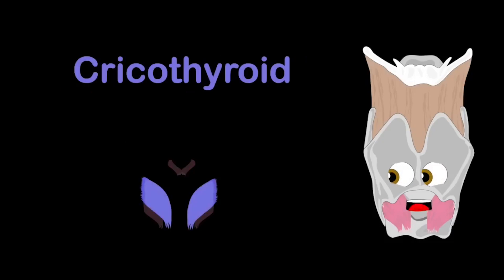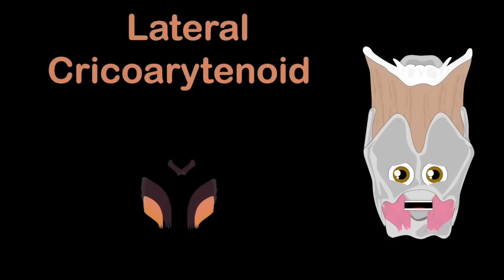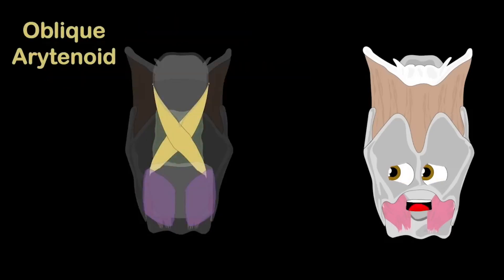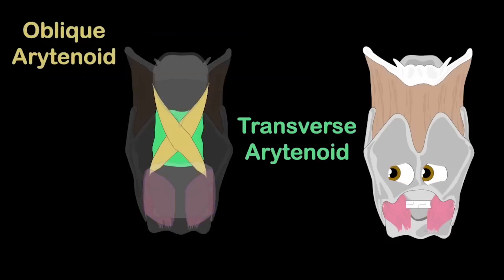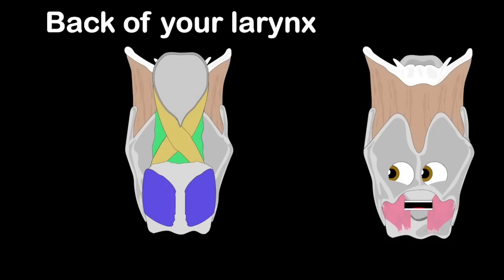The thyroarytenoid and the cricothyroid. Then we have the lateral cricoarytenoid. Oblique and transverse and posterior cricoarytenoid are in the back of your larynx — that's where they were deployed.